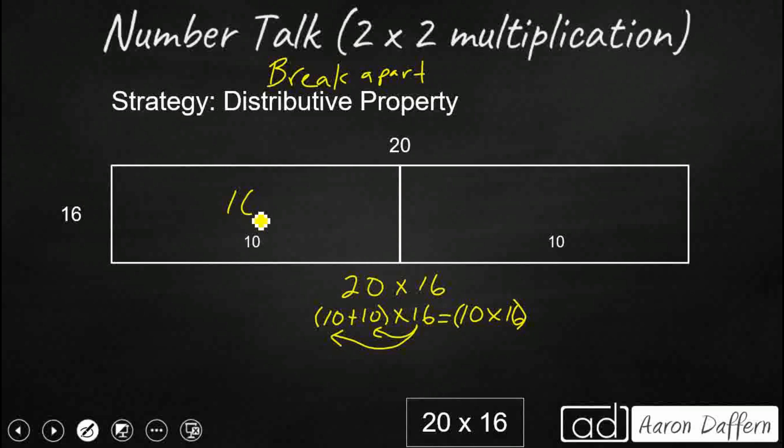So I'm going to multiply 10 times 16 instead of 20, because I'm going to break it in half there. So that's easy. That's 16 with a zero. 160. And then I've got my other 10 times 16. I'm going to add those two together. So that's going to give me another 160. 160 and 160 still gets us back to our answer of 320.